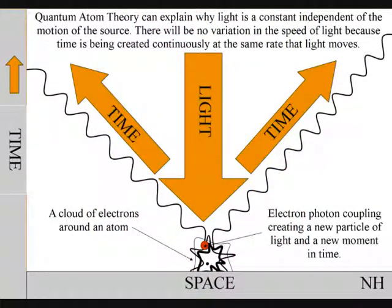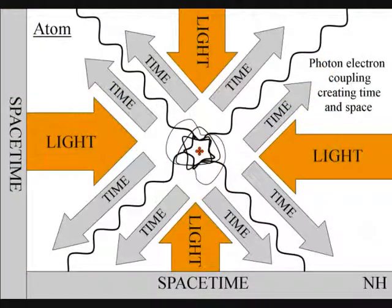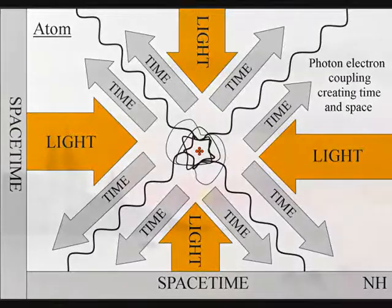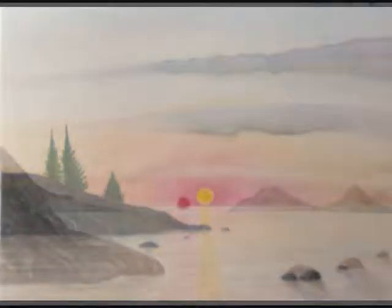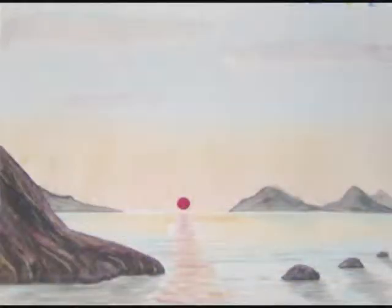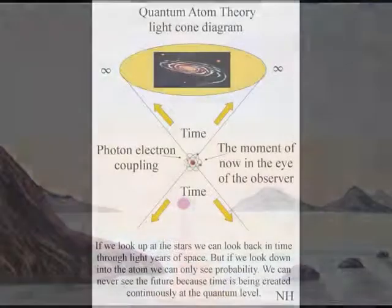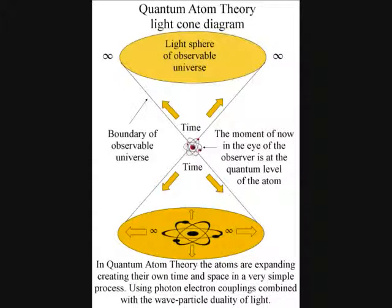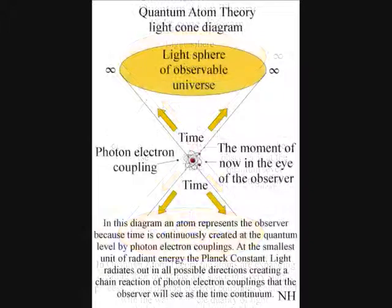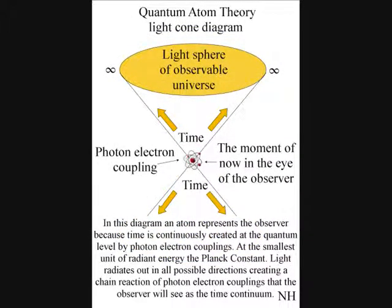Because this is a continuous process at the same speed that light moves, the expanding wave function of light between the atoms will always be a universal constant independent of the motion of the source. Therefore, if we look up at the stars, we can look back in time through light years of space. But if we look down into the atom, we can only see probability. We can never see the future because time is being created continuously at the quantum level.